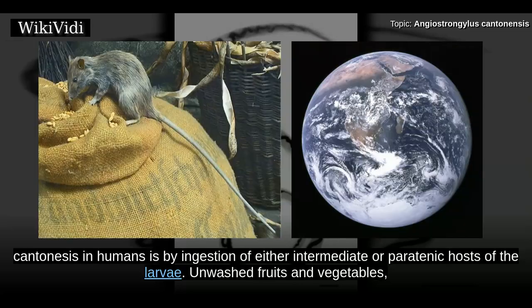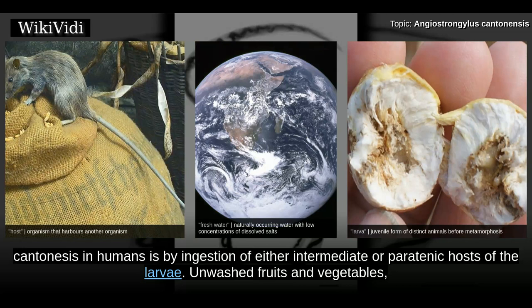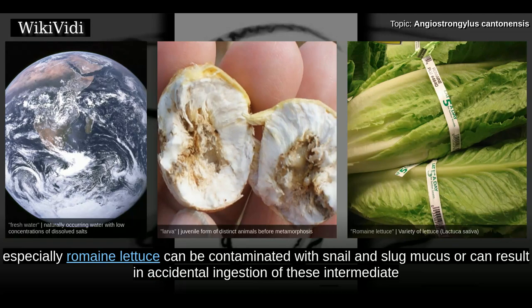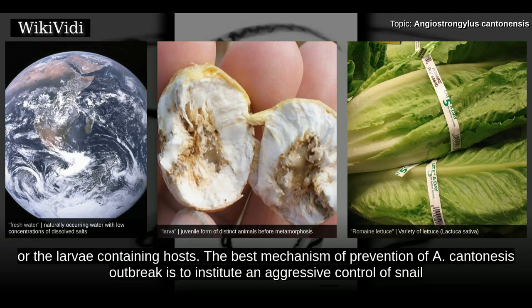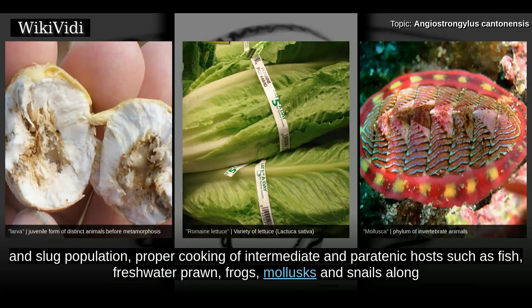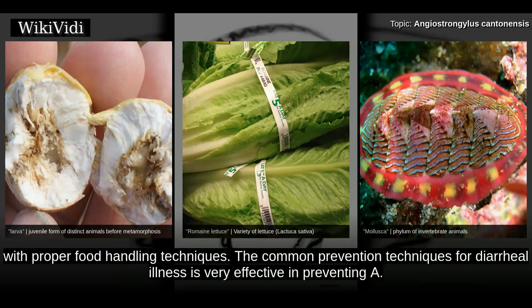The most common route of infection of A. cantonensis in humans is by ingestion of either intermediate or paratenic hosts containing the larvae. Unwashed fruits and vegetables, especially romaine lettuce, can be contaminated with snail and slug mucus or result in accidental ingestion of these hosts. These items need to be properly washed and handled. The best mechanism of prevention is aggressive control of snail and slug populations, proper cooking of intermediate and paratenic hosts such as fish, freshwater prawn, frogs, and mollusks, along with proper food handling techniques. The common prevention techniques for diarrheal illness are very effective in preventing A. cantonensis infection.